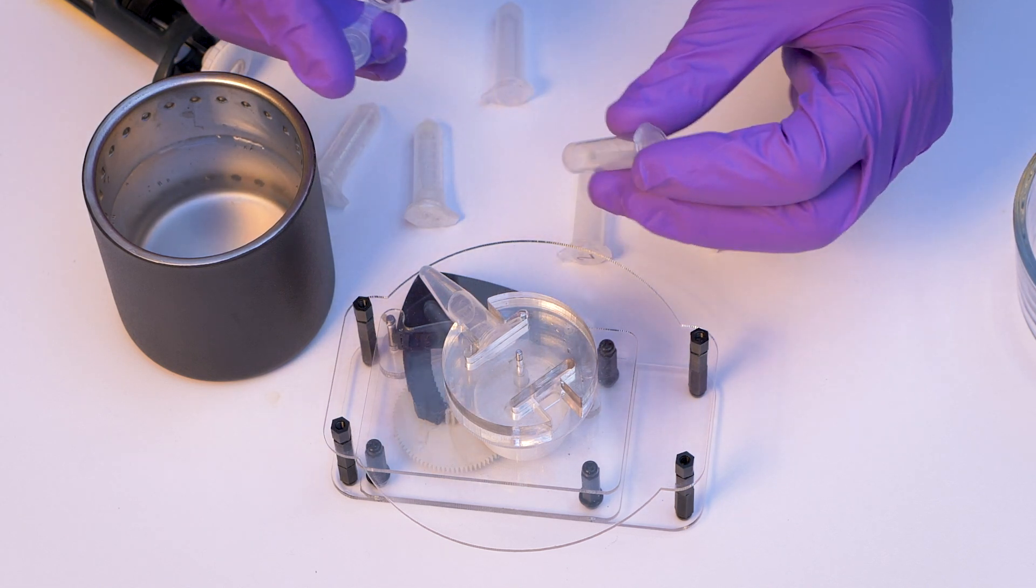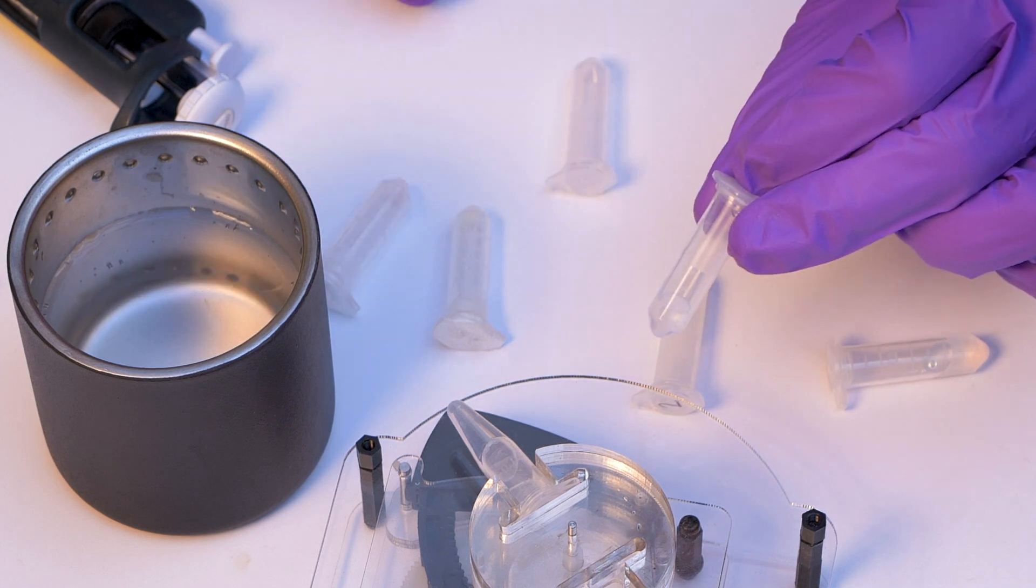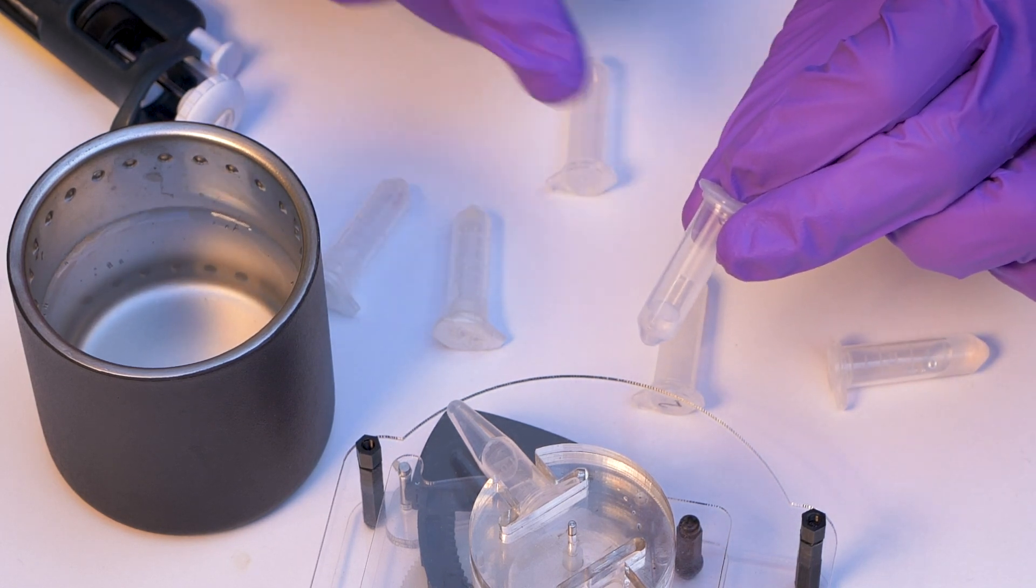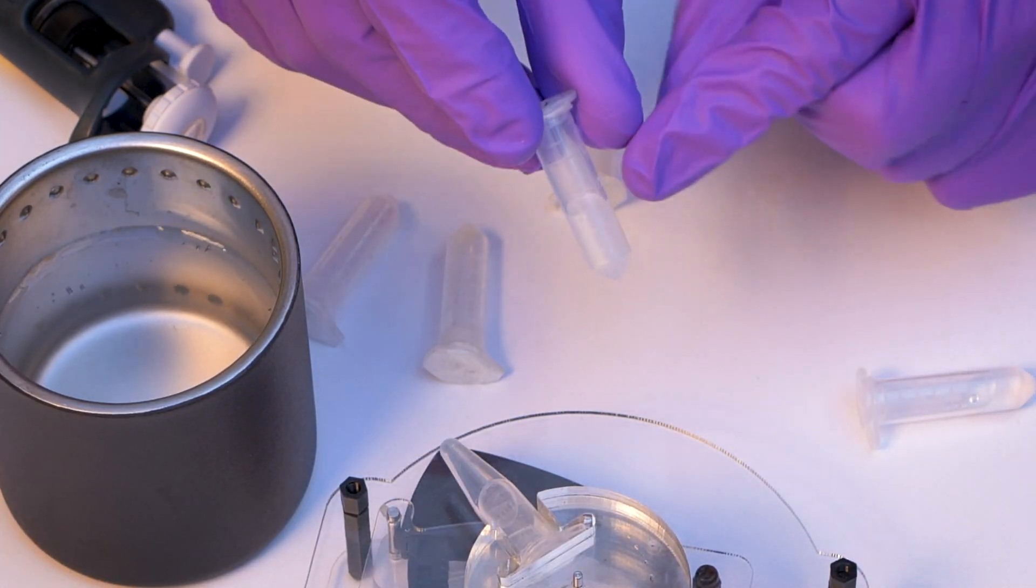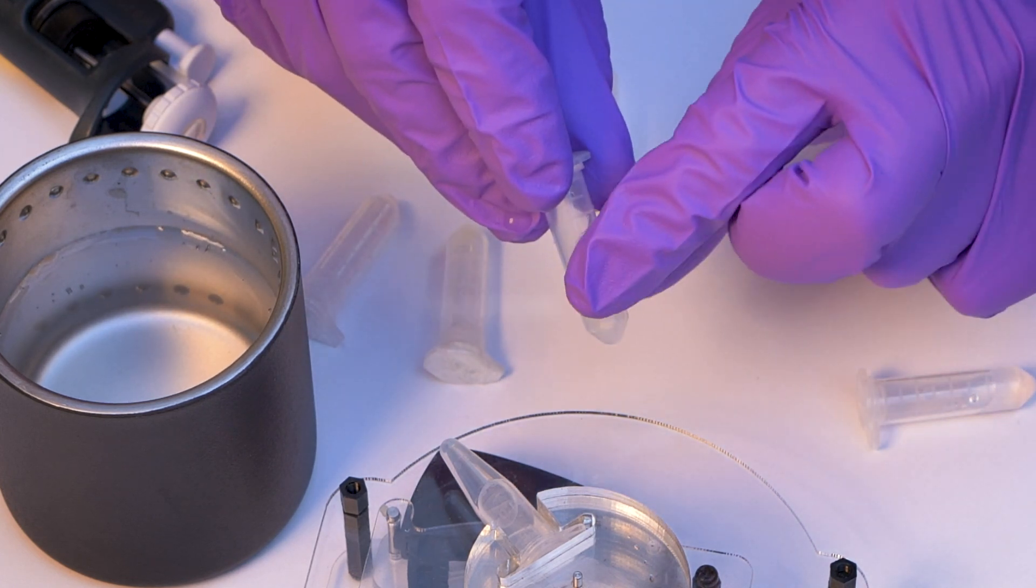So now in this tube, we have our viral RNA, if present, and it's stable. What we want to do is enrich this. So we want a very high limit of detection. So what we're going to do is just add these glass beads. It's a very simple solution of desiccant matrix.